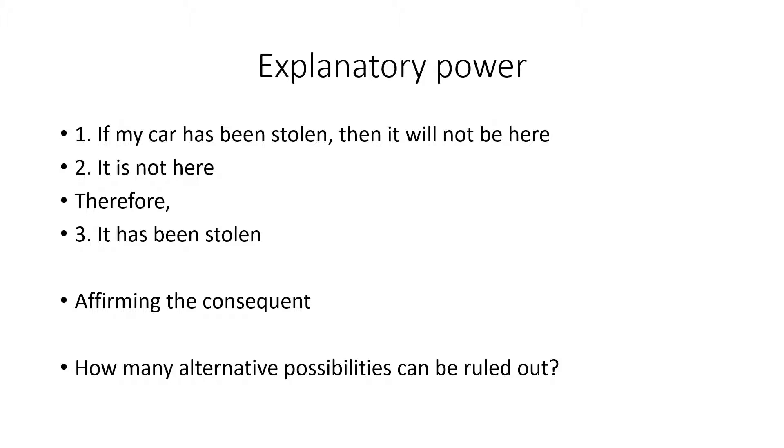The first criterion which we need to use is test whether it's got explanatory power. An explanation has explanatory power when it actually explains what needs to be explained. And it typically goes like this. We'll have the thing that needs to be explained, and then we'll say that this is what we'd expect if the explanation was true.